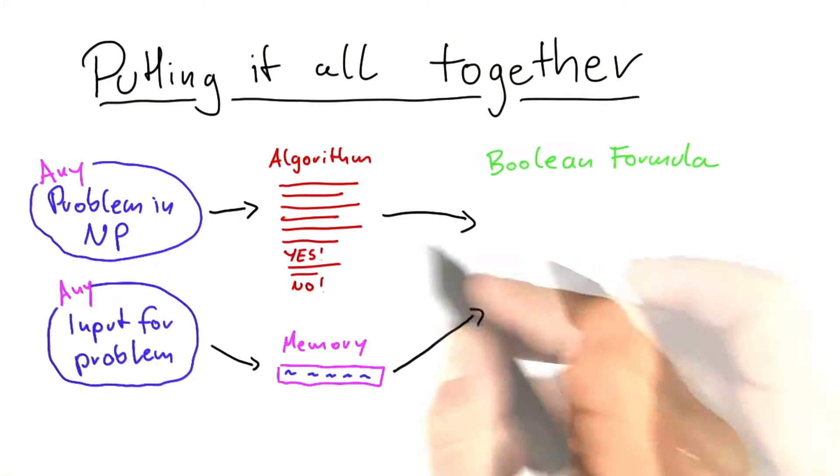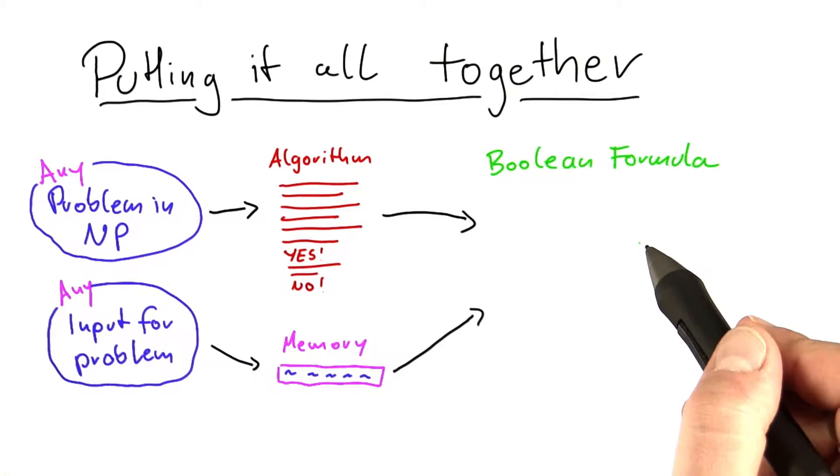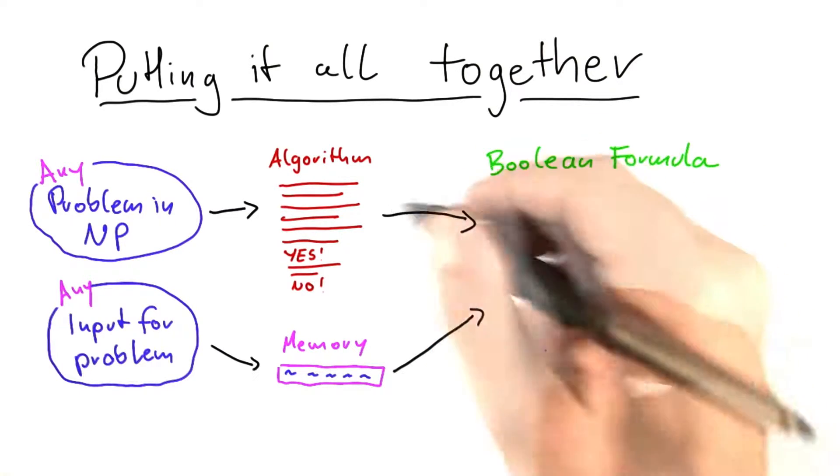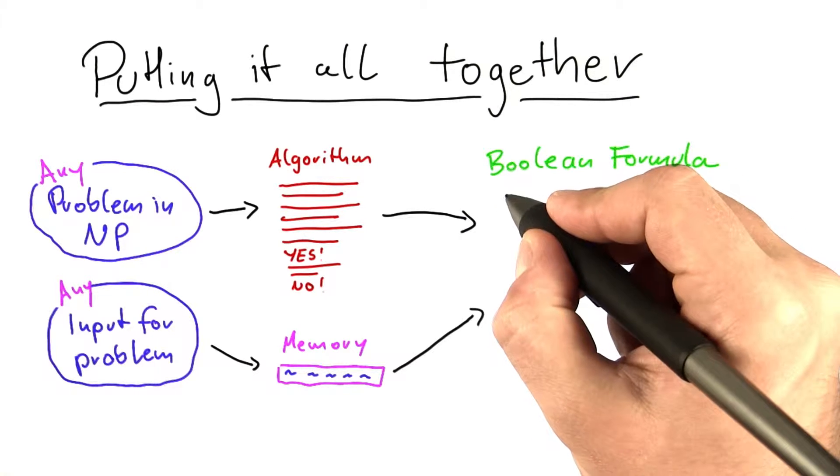And then we took all this and it's a huge Boolean formula and you would probably never really want to write it out explicitly, but it exists and it contains a number of components that we have discussed.